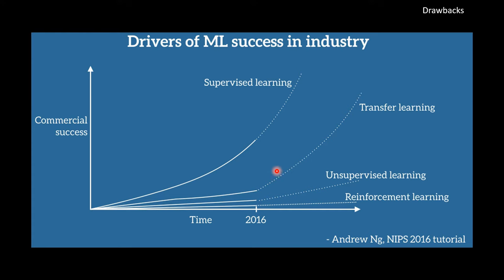This is a graph from Andrew Ng's NIPS tutorial. This old graph, but still it holds. He said that the main driver of success in commercial success would be supervised learning and transfer learning, and it has been since early 2016 to 18, 19. But I think now is the time to focus on unsupervised learning where we don't bind to any such task and we are not just bound to labeled data.